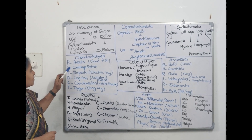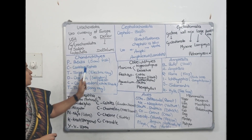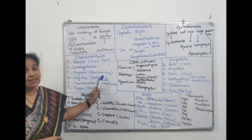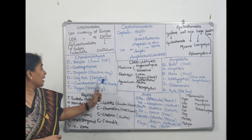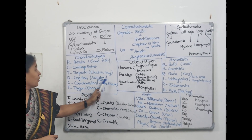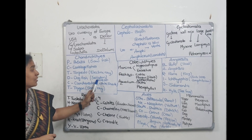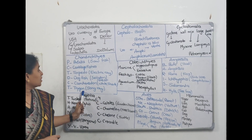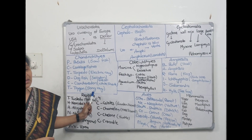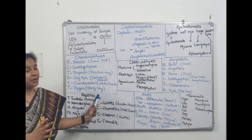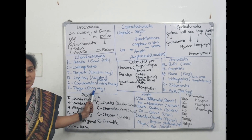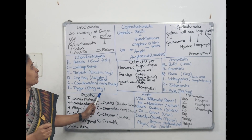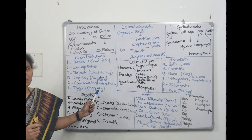Pristis is called Sawfish. Torpedo produces electricity — it is an electric ray. Dogfish is Squalus. Carcharodon is the great white shark. Trygon is a venom fish — it produces poison in its tail, called stingray. So PCT DCT is the code for Chondrichthyes.